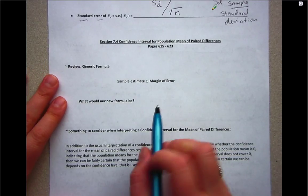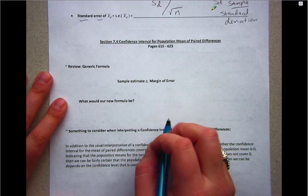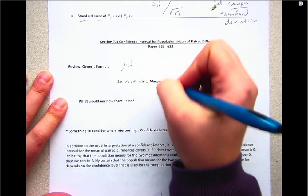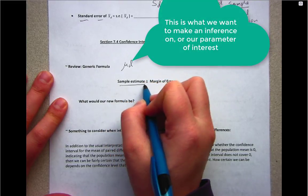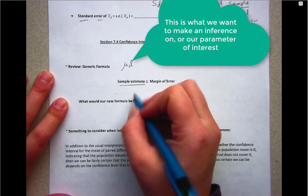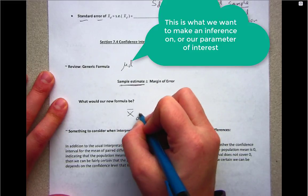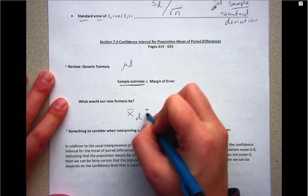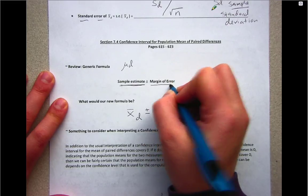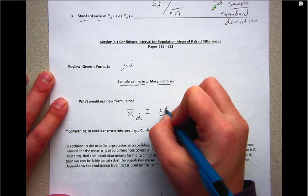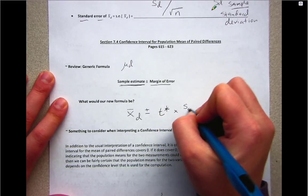When we move into our inferences, we're trying to make an inference on mu sub d - that's our parameter of interest. We know from the sampling distribution that a good sample estimate of mu sub d is X bar sub d. So then we'll add and subtract the margin of error, and our margin of error will be made up of a T star times standard error.